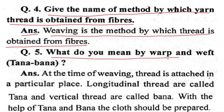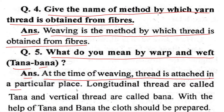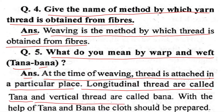Question: What do you mean by tana and bana? Answer: At the time of weaving, thread is attached in a particular arrangement. The longitudinal threads are called tana and the vertical threads are called bana. With the help of tana and bana, the cloth is prepared.